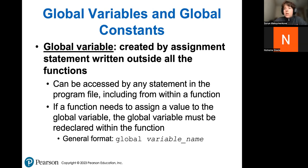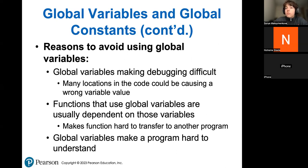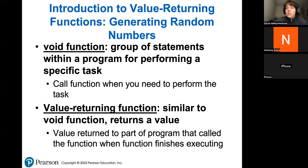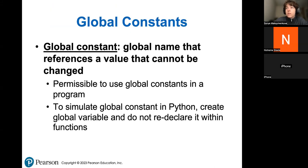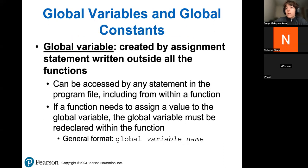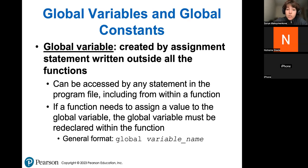Global variables cannot be changed — that is something that stays the same throughout the whole execution of your program. However, if you want to change them within a function, you can do that. You have to redeclare that variable inside of the function where that global variable needs to be changed. So basically it stays the same, but if you need to change it, you will have to create a new global variable inside of that same function.